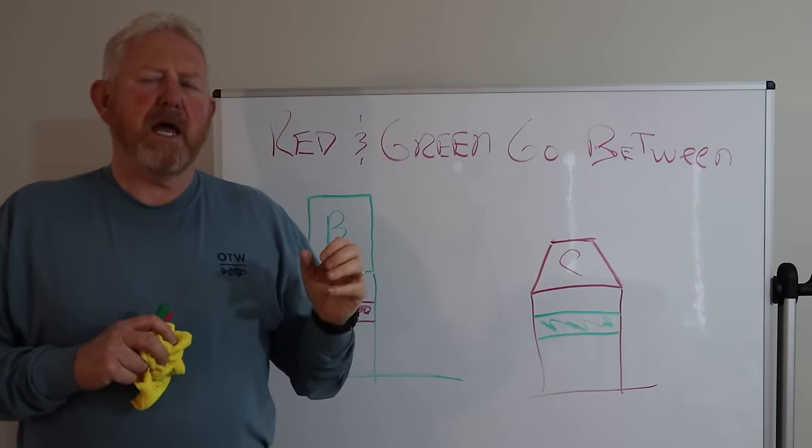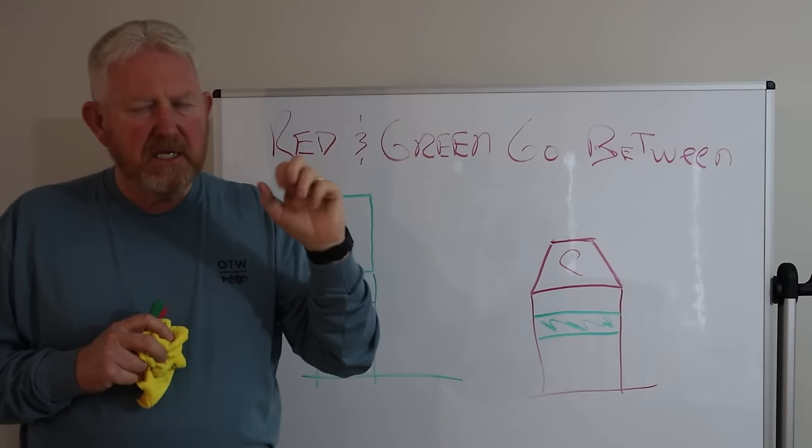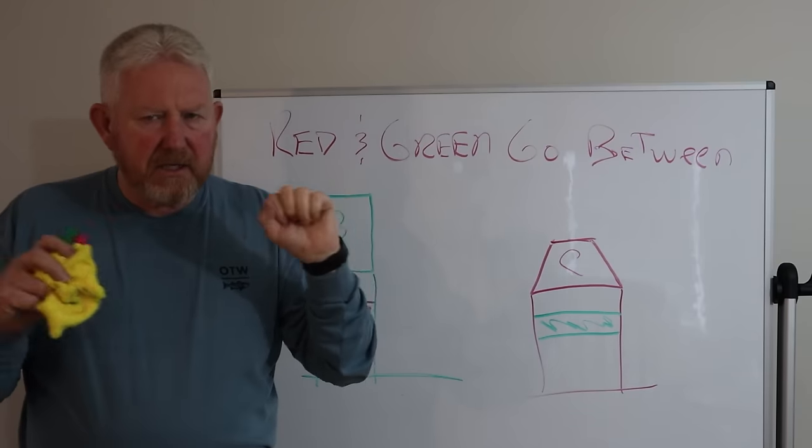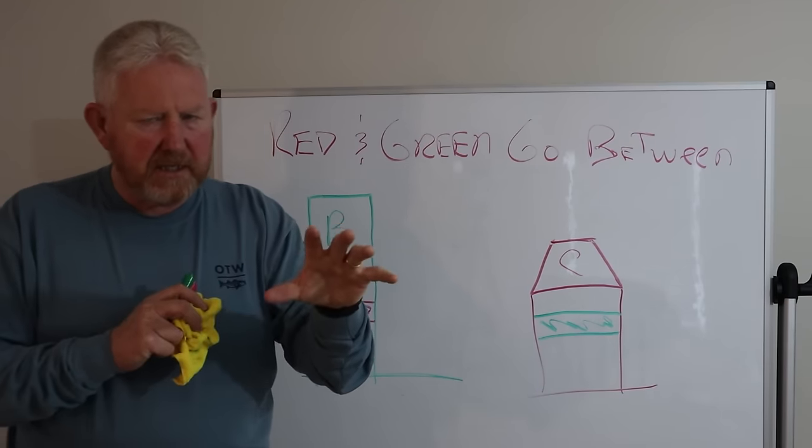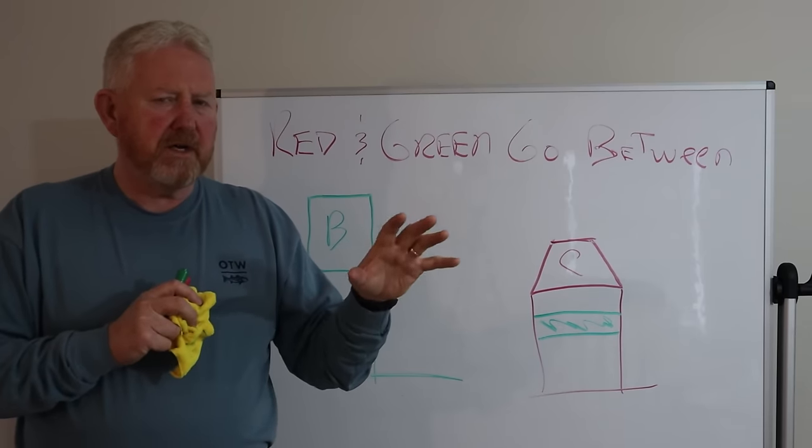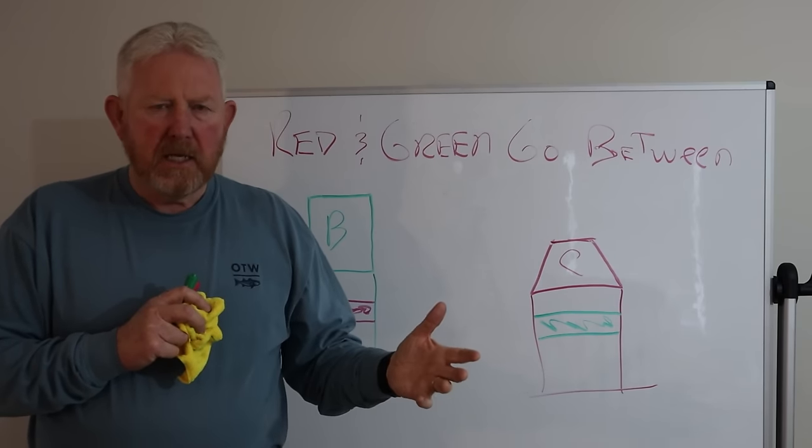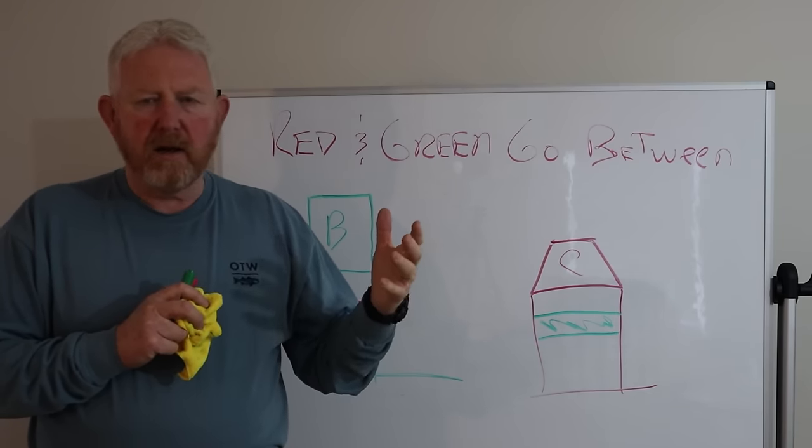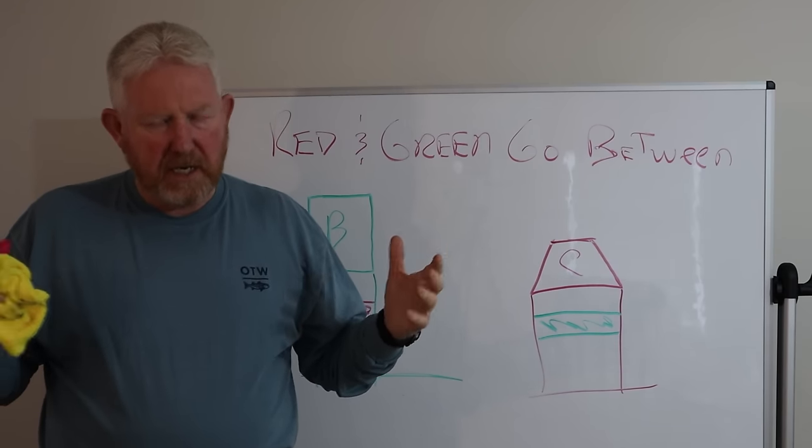But when you come across an aid and it's flashing really fast, that's an indicator. It's trying to get your attention. Something's going on over here. If you get near me, you better pay attention because we've got something going on over here that we want you to pay attention to. It might be a wreck or a rock or something that could really make you end up not having a good night.